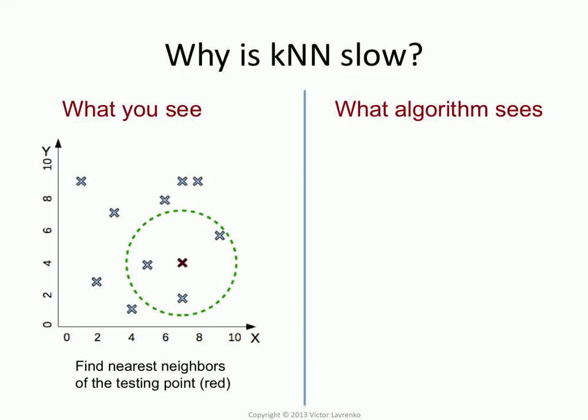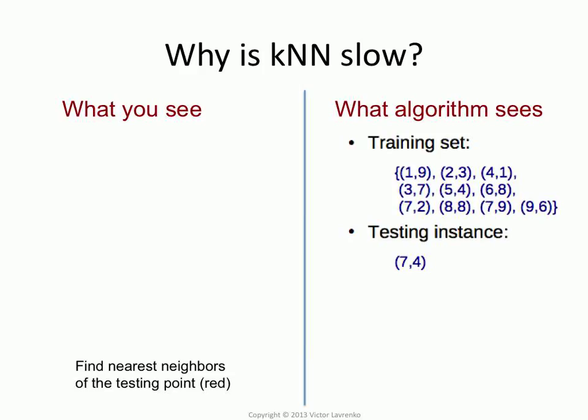The machine, on the other hand, sees the same data set differently. That's our testing point, and these are training points, and the goal is to find the three nearest things. Once you look at a problem the way a machine does, it's not nearly as obvious what the three nearest neighbors are.